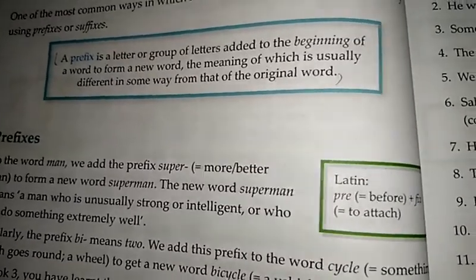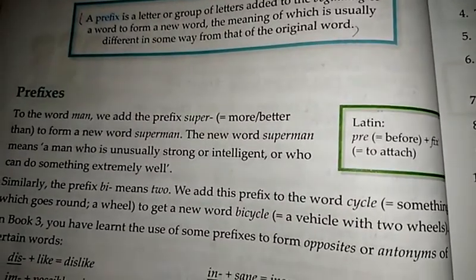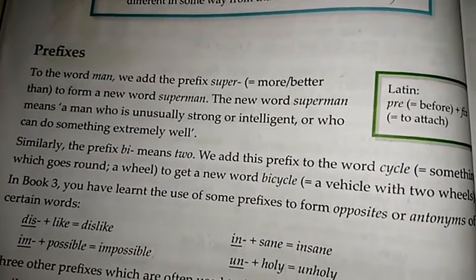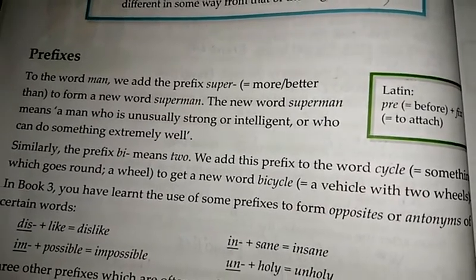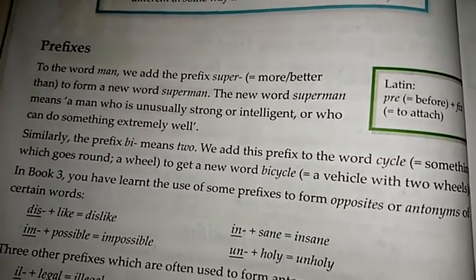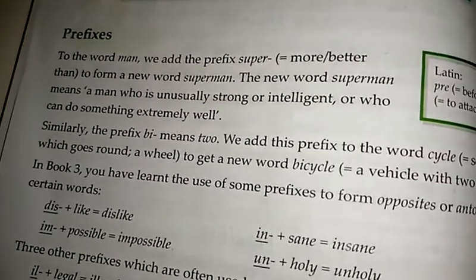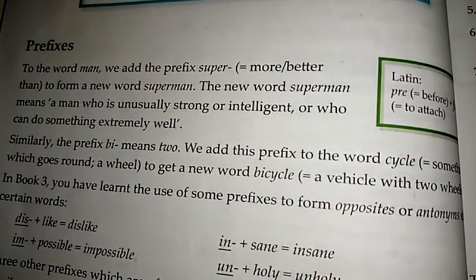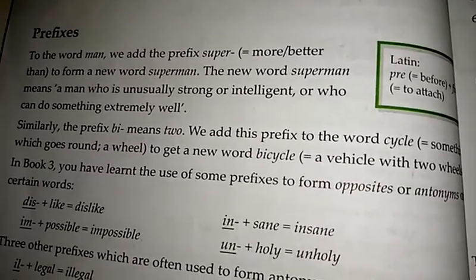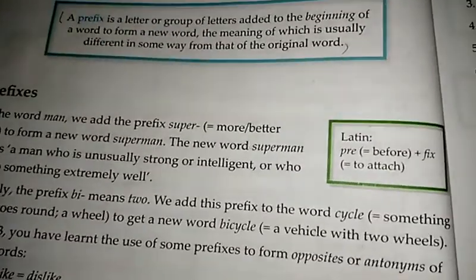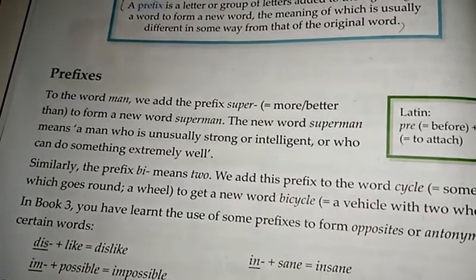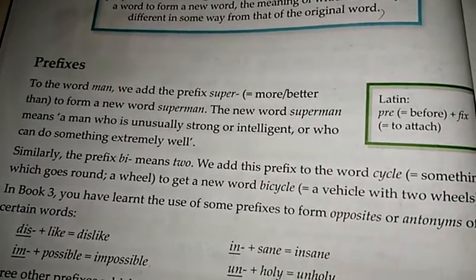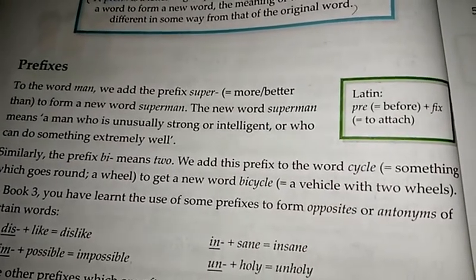As I told you about 'pre-patient' and 'pre-dreaming', the prefix 'pre' means to put a word first. Similarly, the prefix 'bi' means two — we add it to the word 'cycle', something which goes round like a wheel, to get a new word: 'bicycle', a vehicle with two wheels.